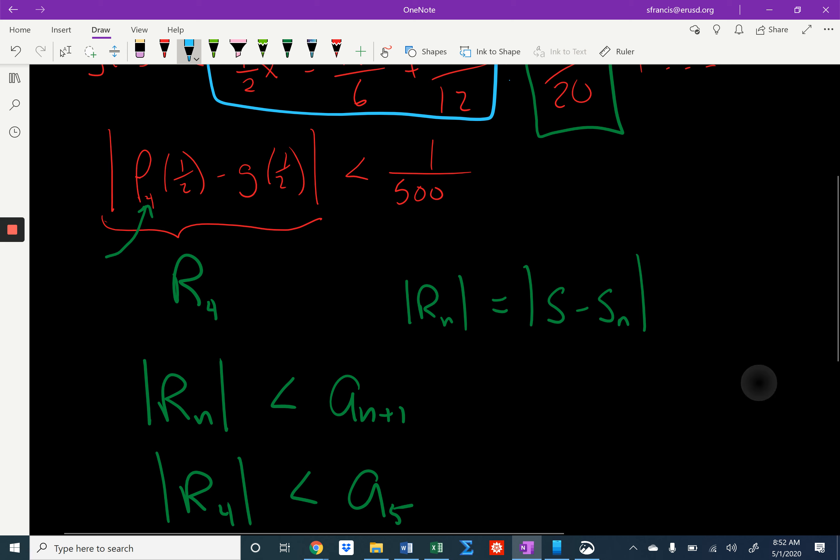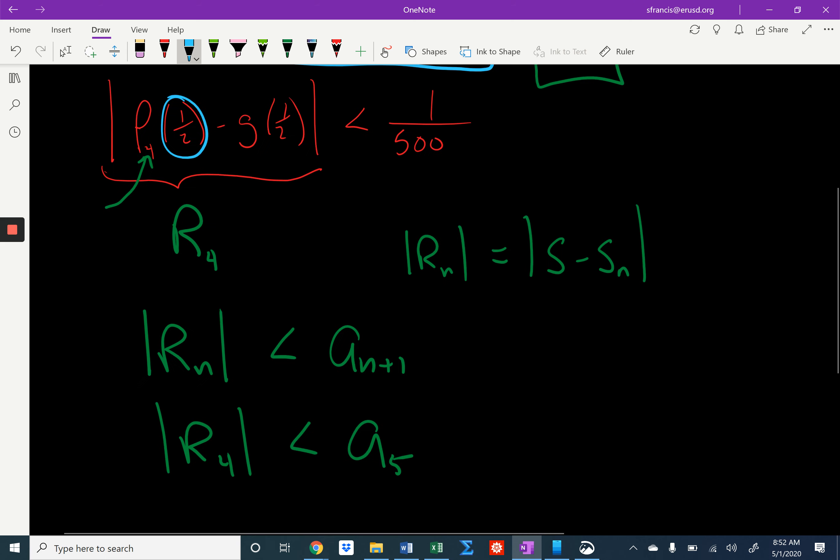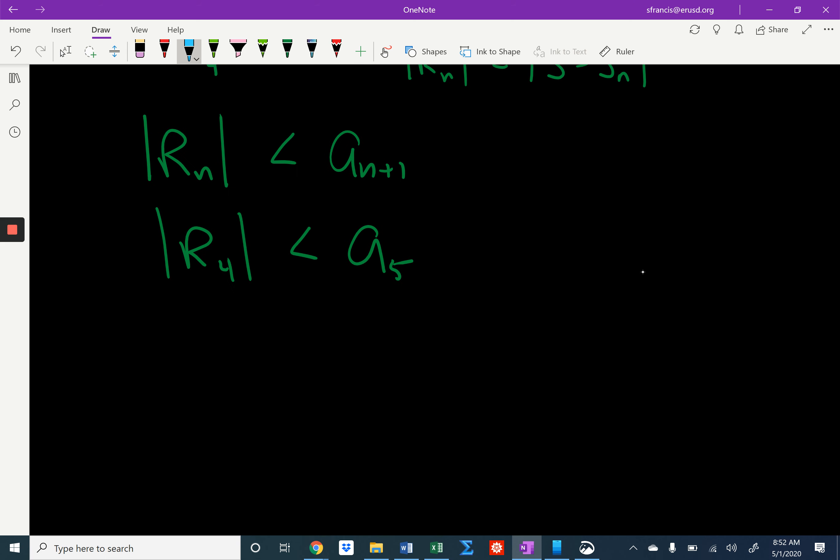Now remember, this is evaluated at 1 half. So I'm going to plug in 1 half. Let's move that 1 over 20 over here and do 1 half to the fifth. And 1 half to the fifth is 1 over 32. And 20 times 32 is 640. So that becomes 1 over 640. And 1 over 640 is less than 1 over 500.